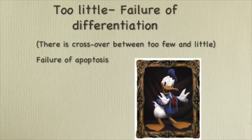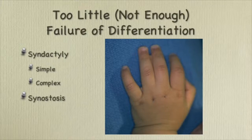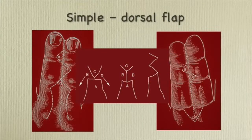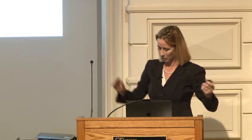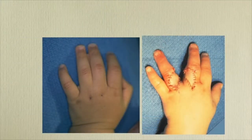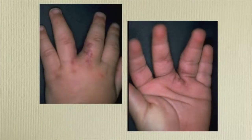Failure of differentiation or failure of apoptosis gives us syndactylies — simple and complex, with complex always having bony involvement. This is a more classic simple one. With syndactyly releases, you make a dorsal flap — the jumping man flap or dancing girl — and advance it into the web space while the side arms go to the sides. It's a five-flap Z-plasty with skin grafts. I actually use fewer and fewer skin grafts over the years, but that's what you want the result to look like.